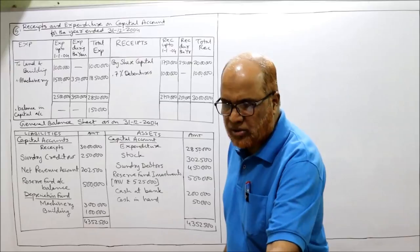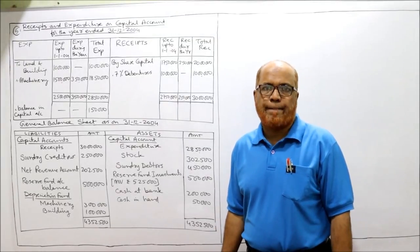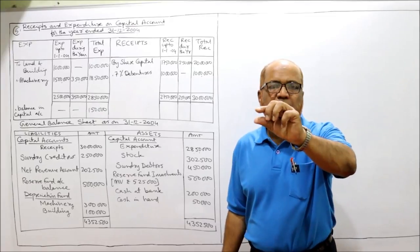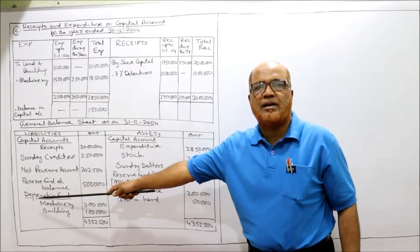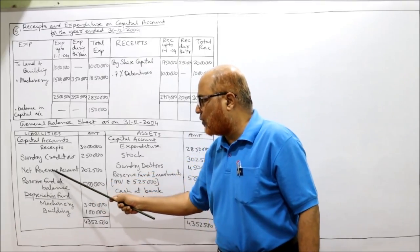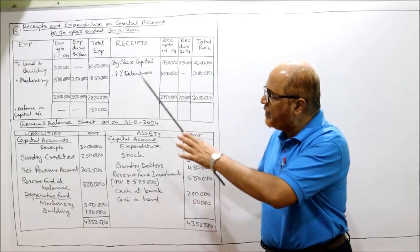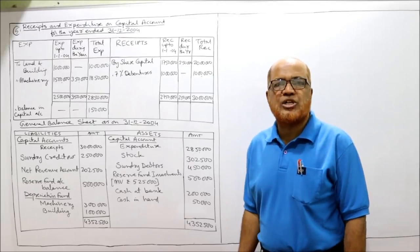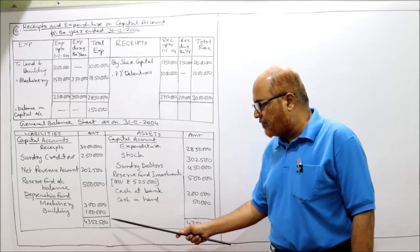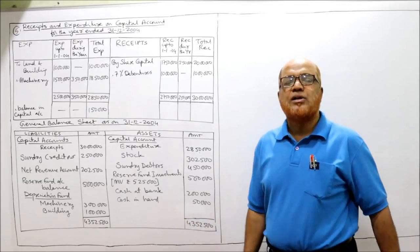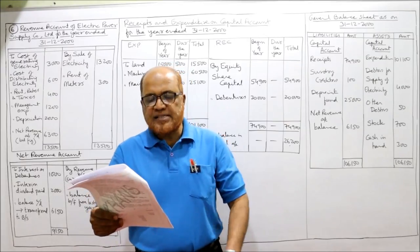The profit and loss account credit balance of 2 lakh 2005 is renamed as the net revenue account balance for electricity companies, shown on the liability side. All items are now taken in the financial statements. The balance sheet tallies at 43 lakh 52 thousand 500 on both sides. This is the end of problem number 5.